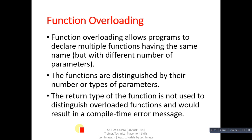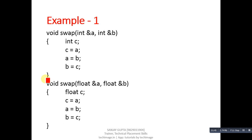If the names of functions are the same and their type and quantity of arguments are also the same but the return type is different, those functions will result in a compile-time error, because the return type is not responsible for overloading functions. Now this is example number one — here you are seeing two definitions of a function called swap.